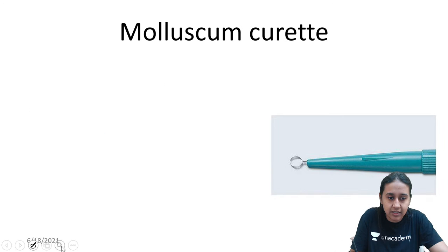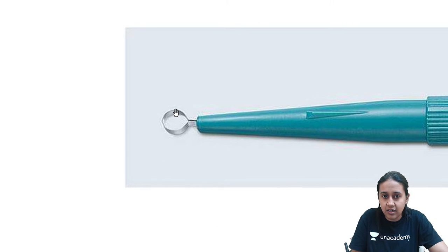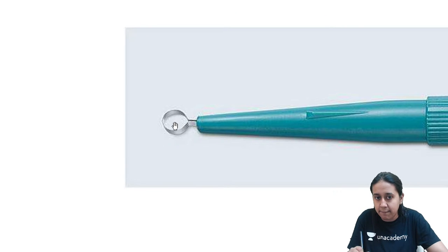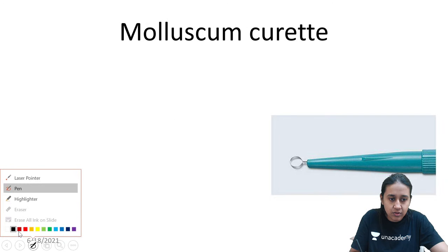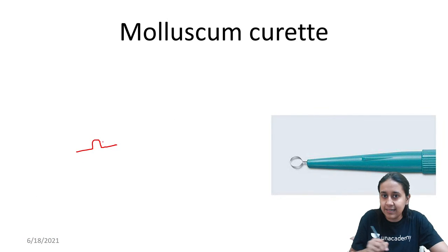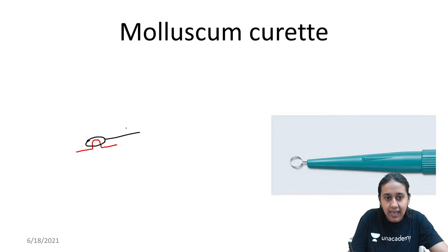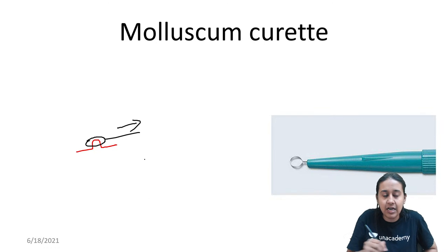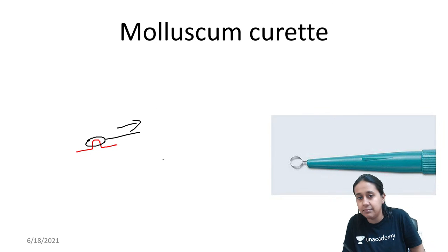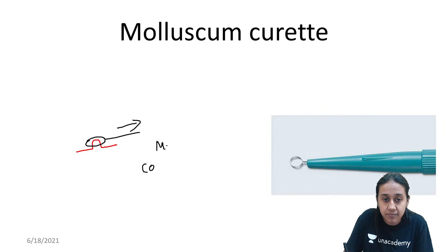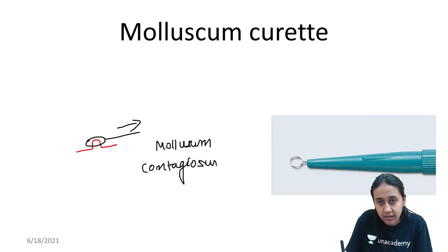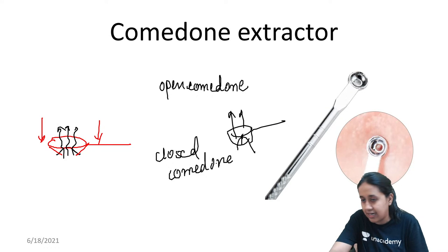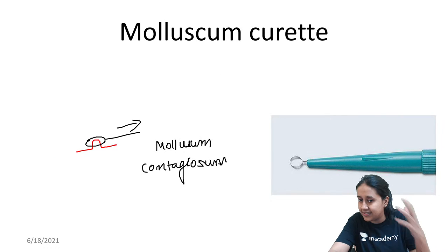Next is the molluscum curette. It has a completely round ring-shaped structure with very sharp margins. You place the ring around the molluscum lesion and give a tangential pressure, which causes the whole lesion to come out. This works very well in molluscum contagiosum. Please do not confuse the comedone extractor with the molluscum curette, as they look very similar to each other.